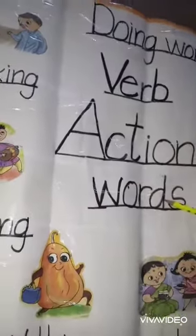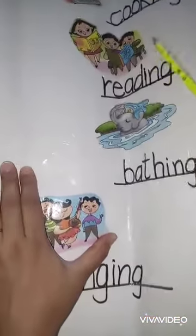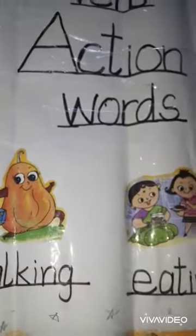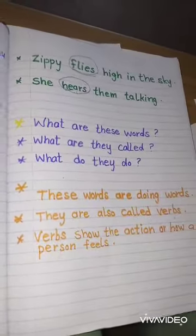We call the verbs doing words or action words. Here are some examples: talking, dancing, walking, eating, singing, bathing, reading, cooking — all action words. The action words we call doing words, like clap and bath. These are doing words that show the action. Verbs show the action or how a person feels.